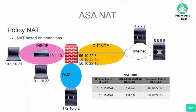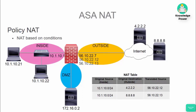Our last type of NAT is policy-based NAT. Policy-based NATs translate addresses based on policy rules, where conditions like destinations determine what address will be used for the NAT. For example, if an inside source is destined for IP address 4.2.2.2, we translate the source to our .12 address. And if an inside host is destined to 8.8.8.8, based on that condition, we translate the source to the .13 IP. This shows how you can choose which translation to use based on certain conditions.